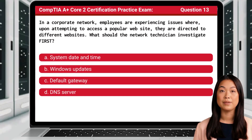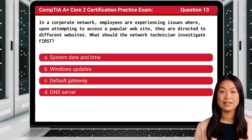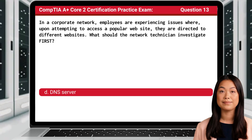Question 13. In a corporate network, employees are experiencing issues where, upon attempting to access a popular website, they are directed to different websites. What should the network technician investigate first? The answer is D: DNS server.